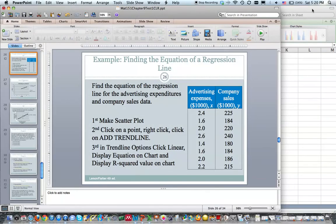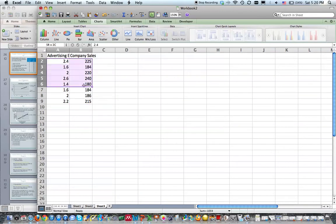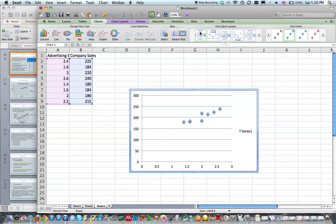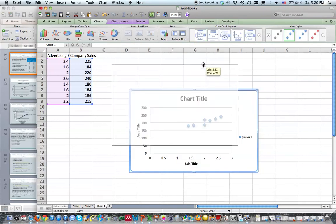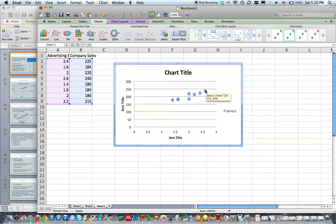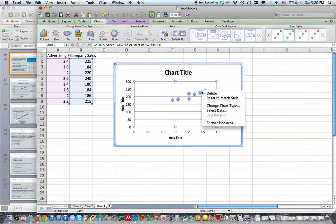So I'm going to go to Excel, I'm going to highlight my data, go up to charts, scatter, I'm going to insert a scatter plot. And then, like it said on the directions, I'm going to right click on a data value. So I need to click on just one, right click.